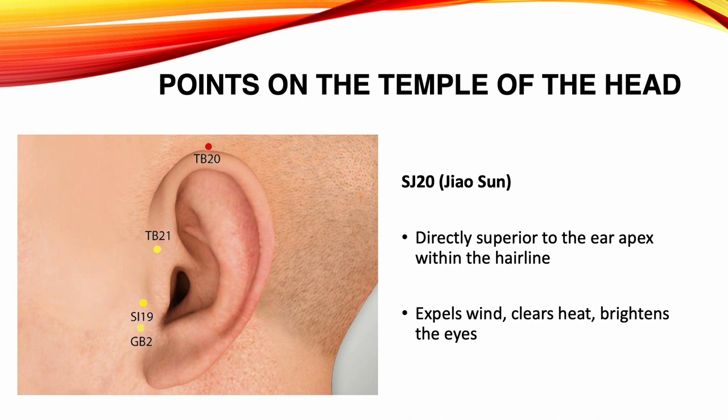Sanjiao 20, Jiao Sun. Location: directly superior to the ear apex, within the hairline. Functions: expels wind, clears heat, brightens the eyes. Indications: headache, ear pain, redness and swelling of the ear, toothache, redness of the eyes.